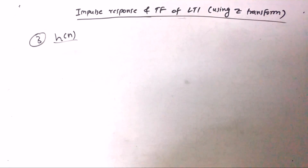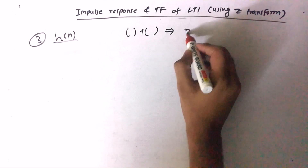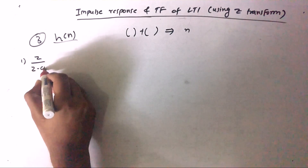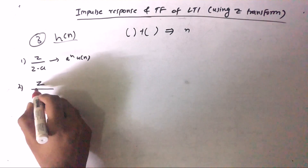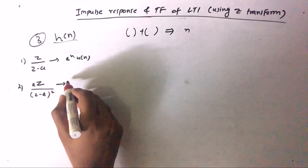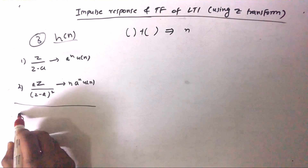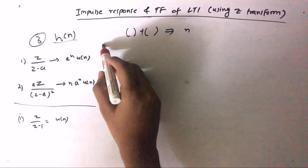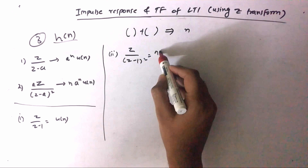Now let's talk about H(N). To find H(N) you should know the inverse Z-transform formulas. The first formula: Z/(Z−A) converts to A^N · U(N). The second formula: Z/(Z−A)² converts to N · A^N · U(N). For example, Z/(Z−1) is just U(N) because 1^N = 1. And Z/(Z−1)² is N · U(N).